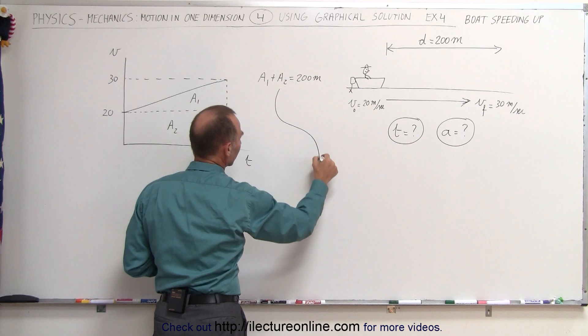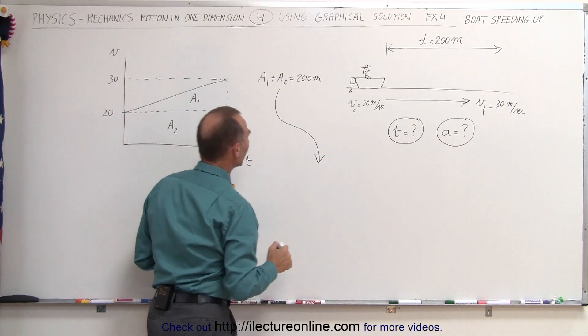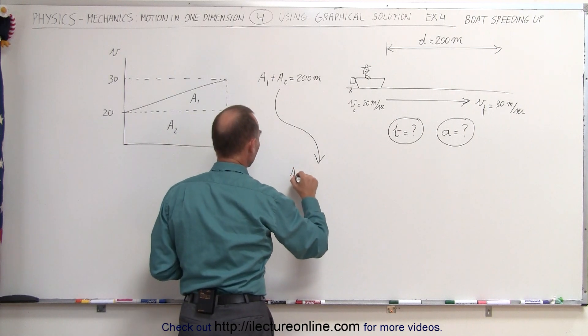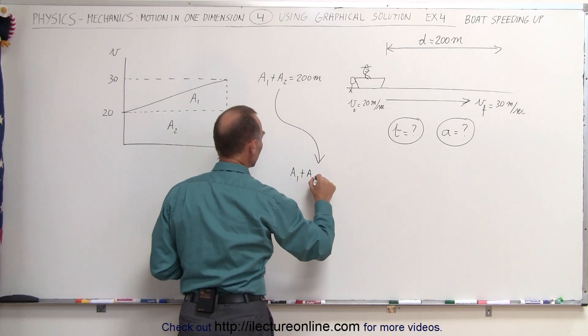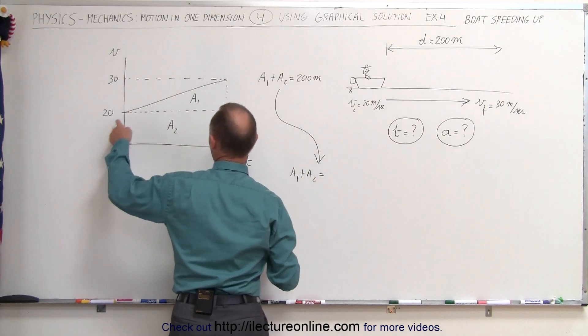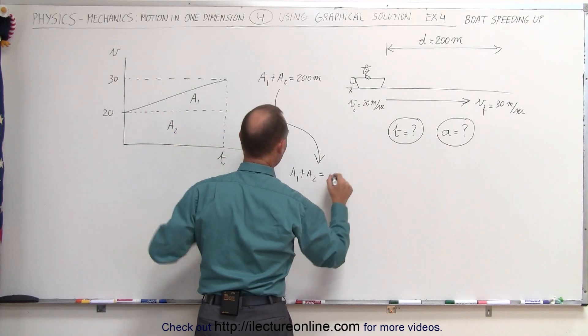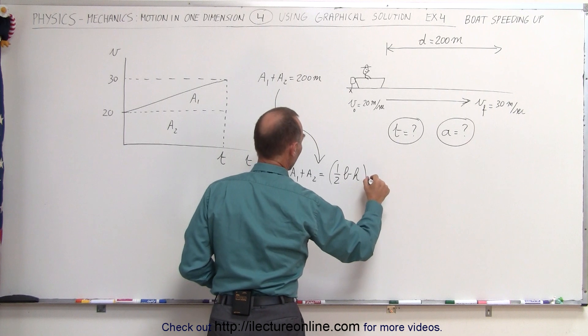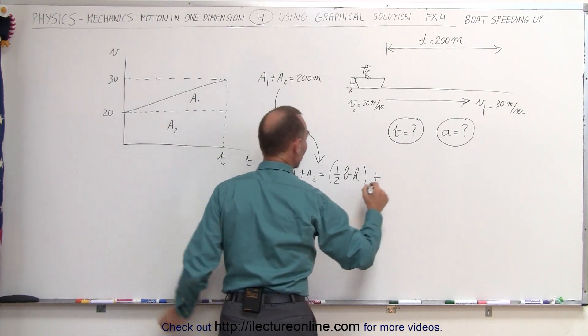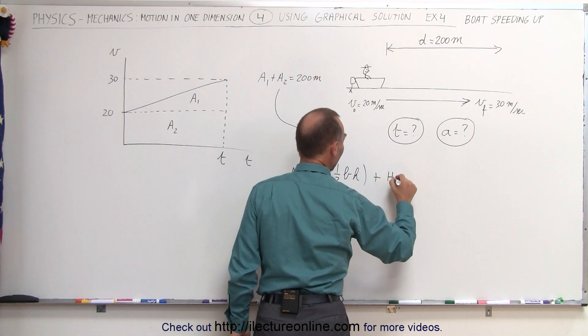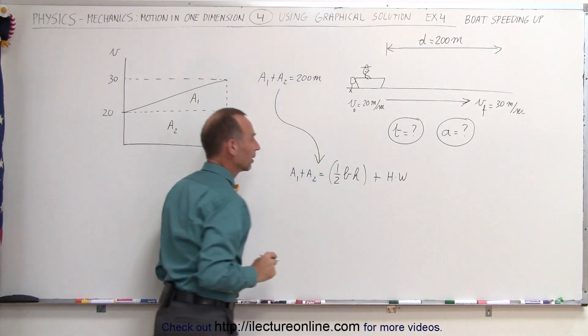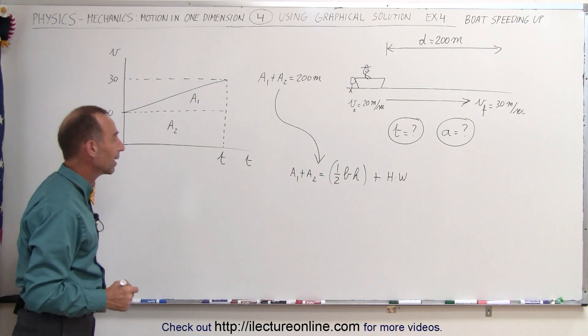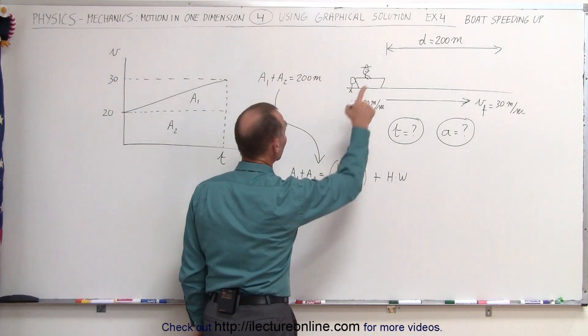I'm going to come down here to give myself a little bit more space. So what we're going to do here is calculate the total area. So a1 plus a2 is equal to, well the area a1 would be 1/2 the base times the height of the triangle plus the area of the rectangle which is the height times the width. So that's the general equations for the area of a triangle and the area of a rectangle.